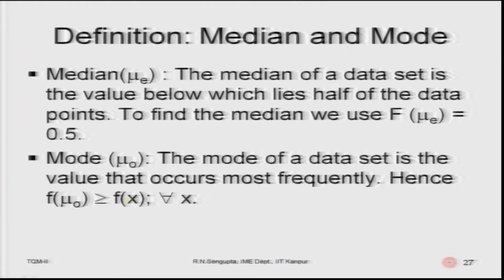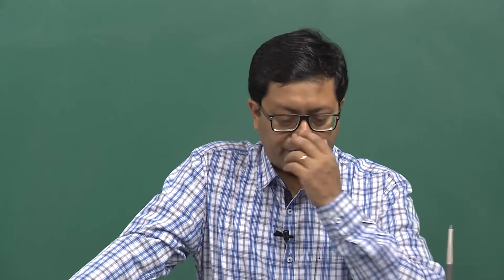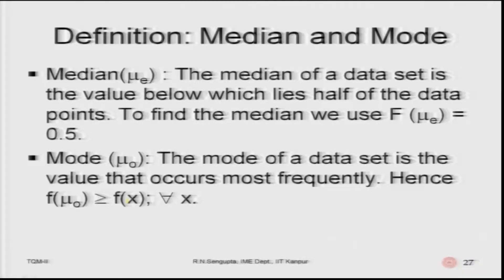The median and mode will not be used much in design of experiments, but we define them for convenience. The median is the value below which lies half the data — the CDF value at that point equals 0.5. The mode is the value that occurs most frequently — the value for which the frequency or probability is highest. The mode may not be unique; there can be more than one mode.